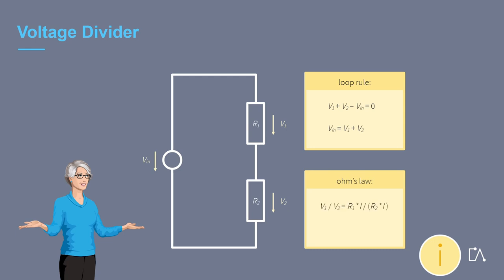Now we apply Ohm's law to determine the ratio of the partial voltages V1 and V2 to each other. We insert V is equal to R times I.